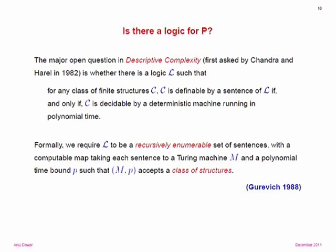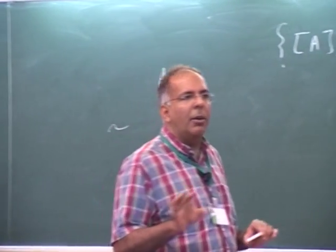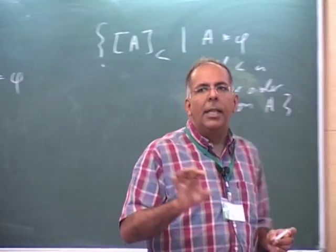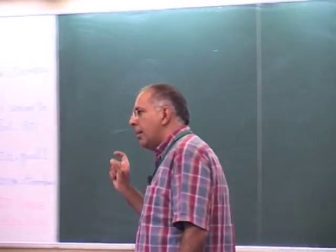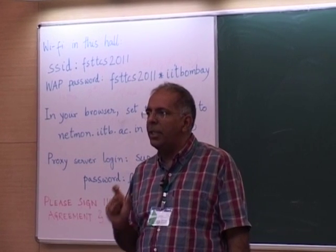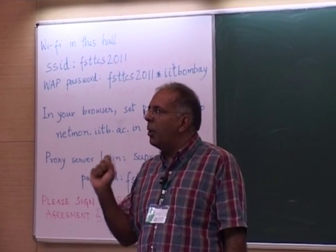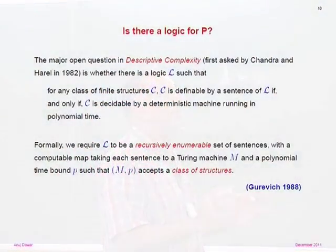Fagin's theorem leads naturally to a question first posed by Chandra and Harel in a paper back in 1982, which has for now nearly 30 years been the main open question in descriptive complexity: whether we can do a similar characterization for polynomial time. Ramanujam gave two characterizations — one in terms of second-order Horn logic, and one in terms of fixed-point logic with least fixed points — but these were specifically on ordered structures. The question is whether it's possible to characterize polynomial time without making that restriction.